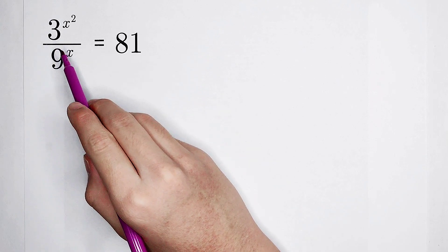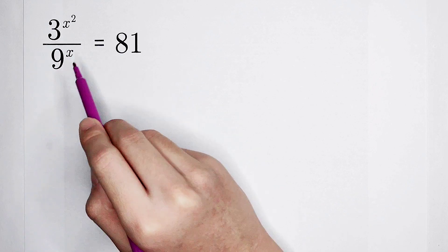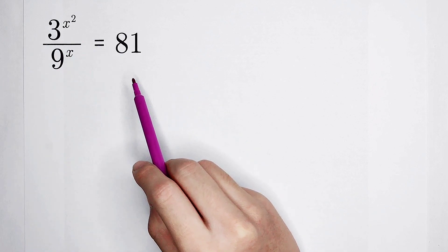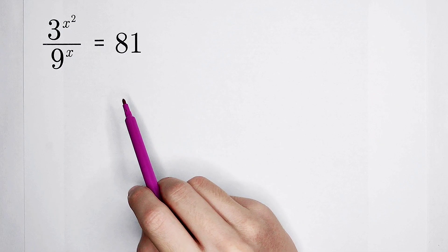3 to the power of x squared, divided by 9 to the power of x, is equal to 81. How do we solve it?